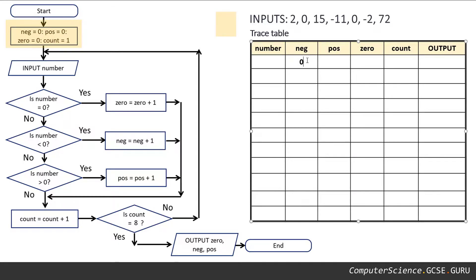So we're going to document what we do as we go along in the trace table. Our pos variable is being set to zero. We have a variable called zero which is going to be set to zero. And we have a variable called count which is going to be set to one.